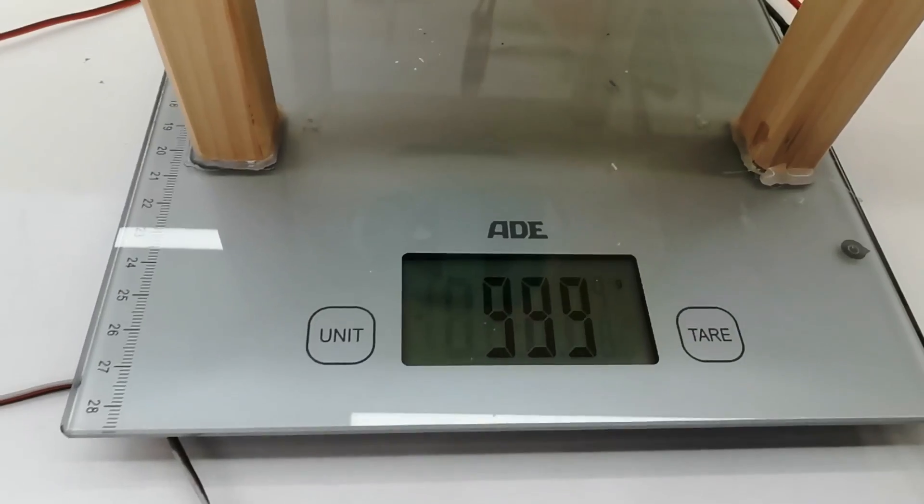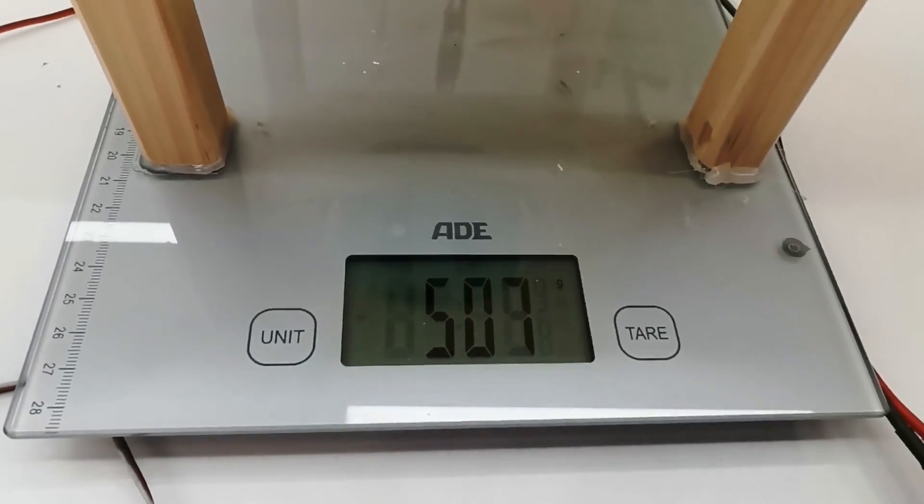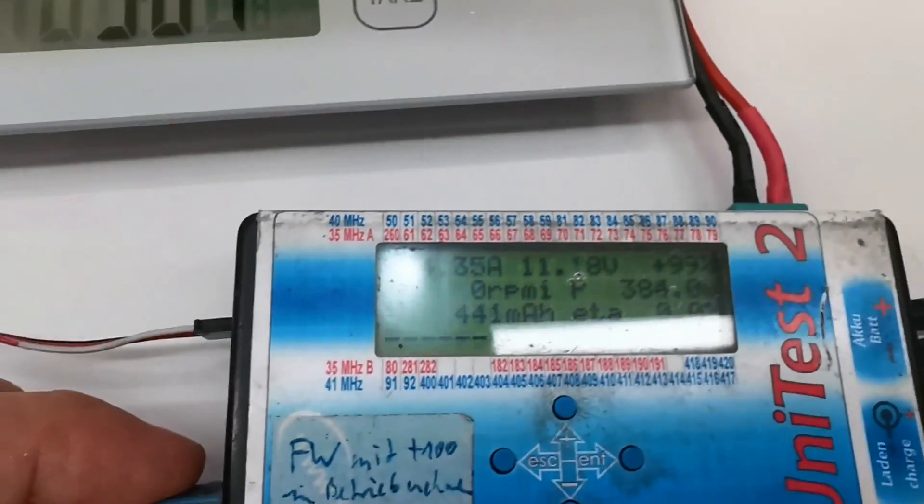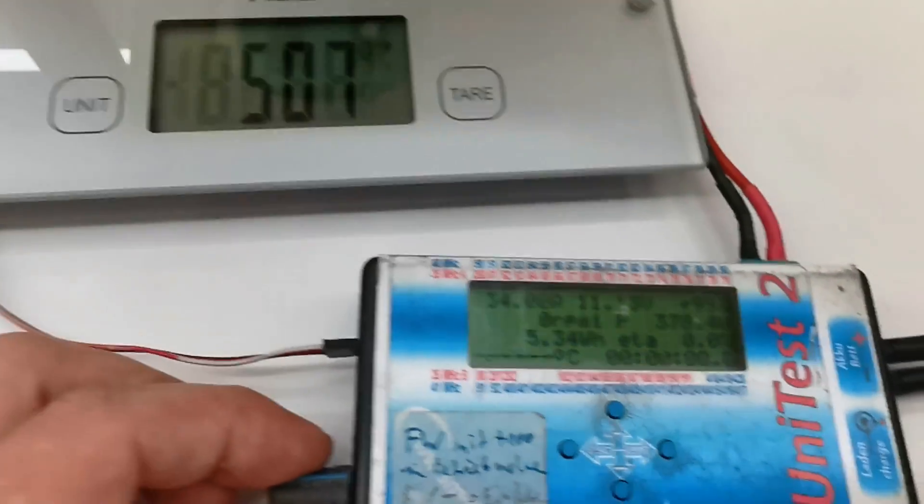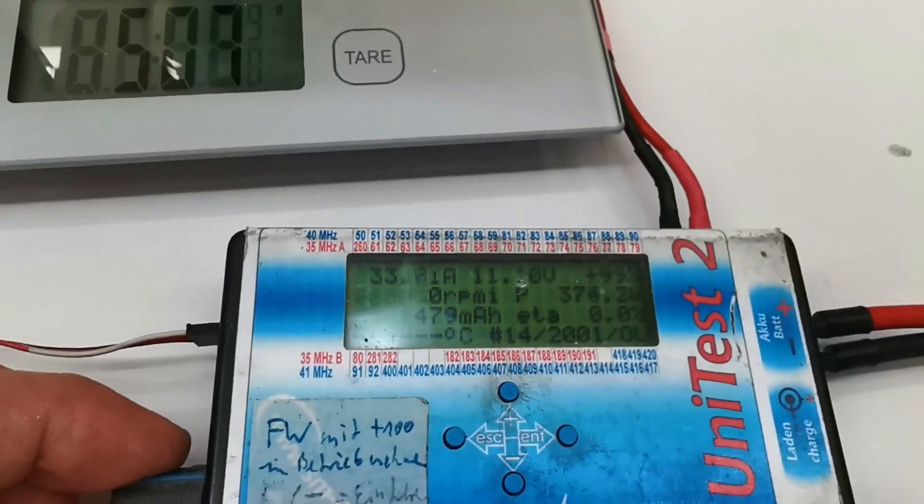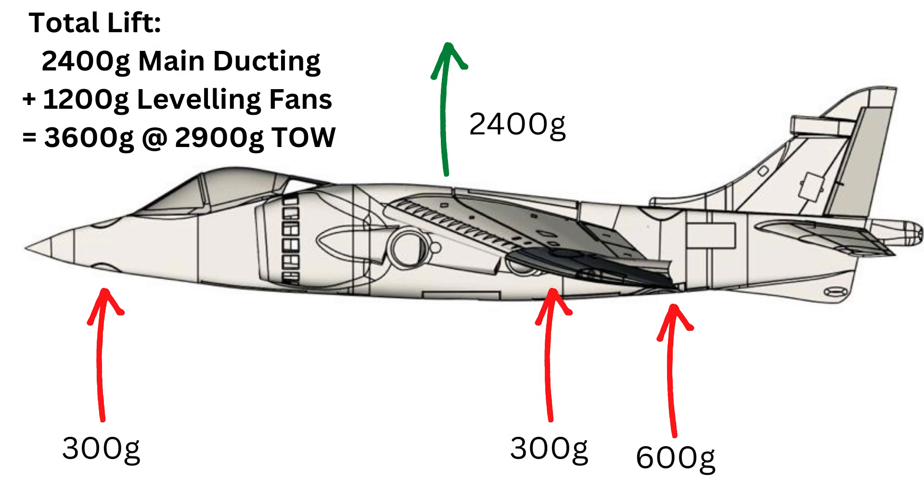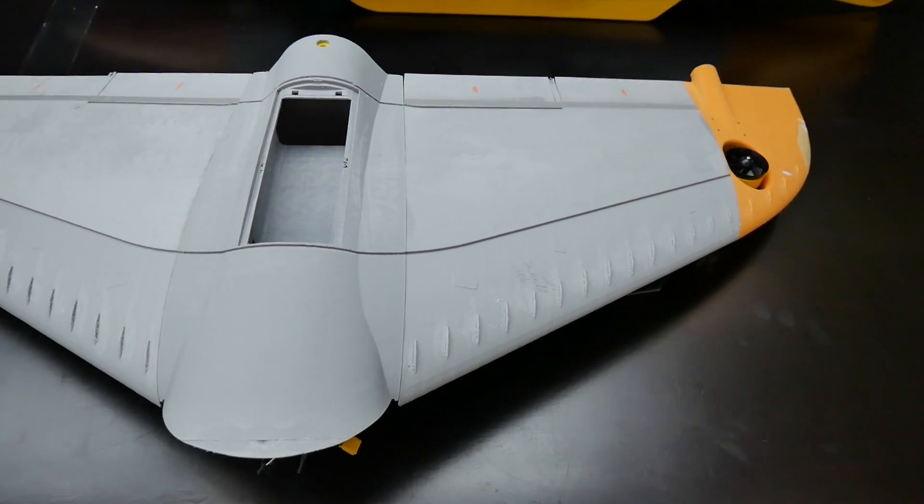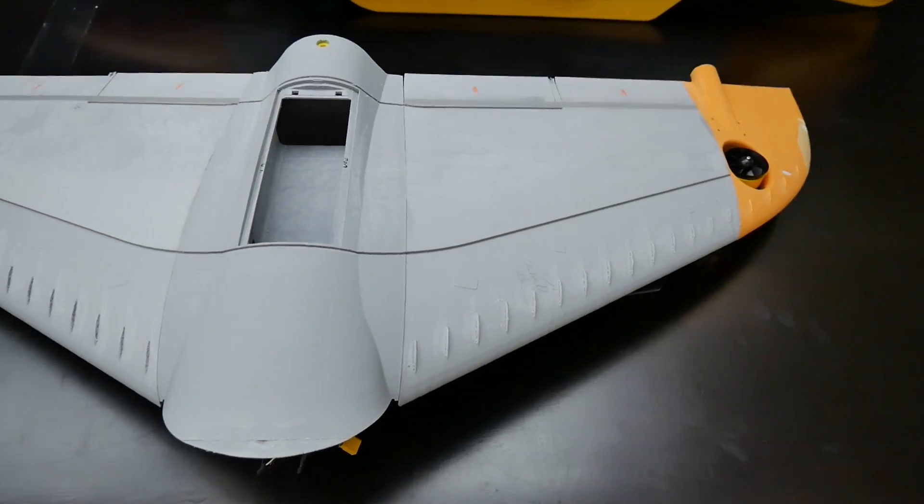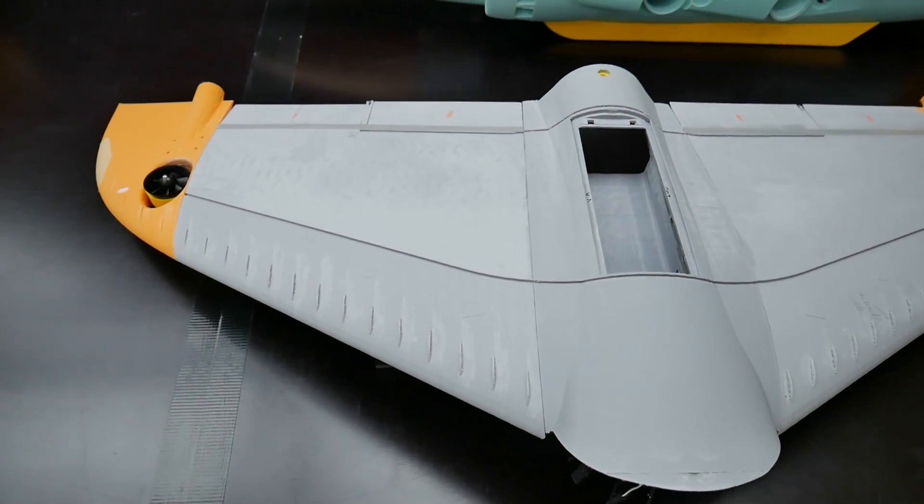This 50mm EDF got just 500g of thrust because it was not well balanced but normally they got over 900g. The final takeoff weight of our Harrier should be 2900g for the VTOL version. So we got 700g plus to do a vertical takeoff.